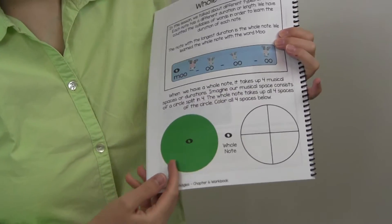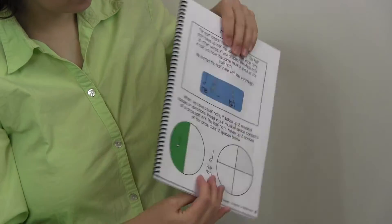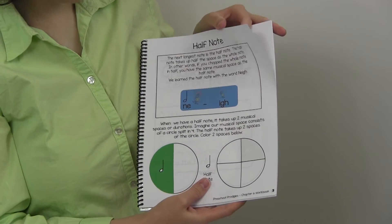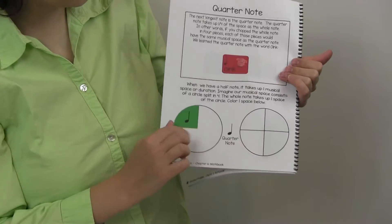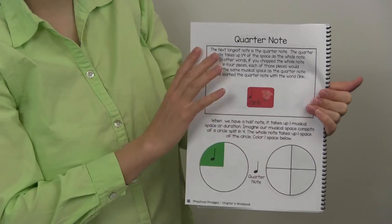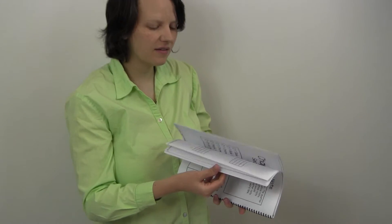So now we've got the whole note like this, the big circle, and the half note, and we've got quarter notes, and then you color in, you know, that much of it. And so there's a lot that is covered in these workbooks that I'm really excited that they are now in book form